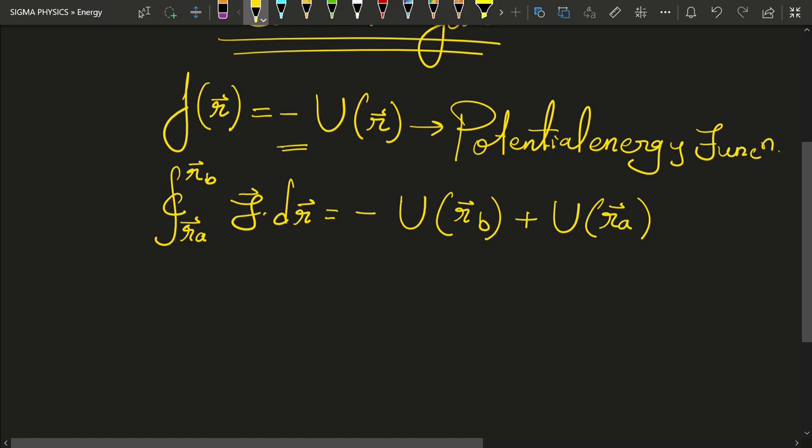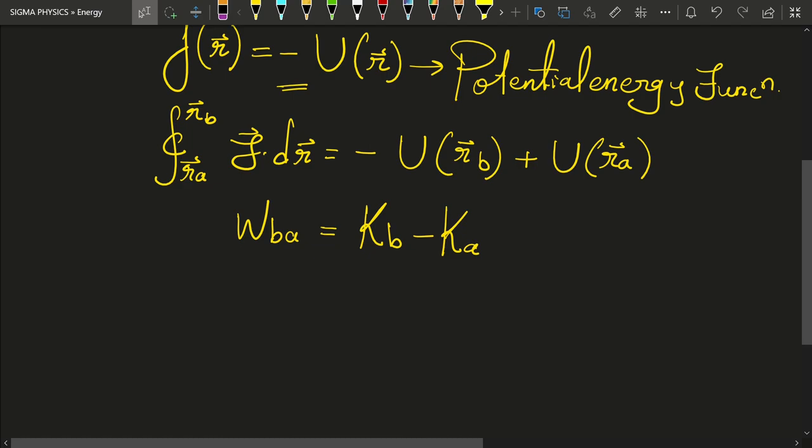Now we also know that this is nothing but WbA, the work done by the particle moving from A to B. That is also equal to the change in kinetic energy, its kinetic energy at B minus its kinetic energy at A. And if I call U of Rb as Ub and U of Ra as Ua,